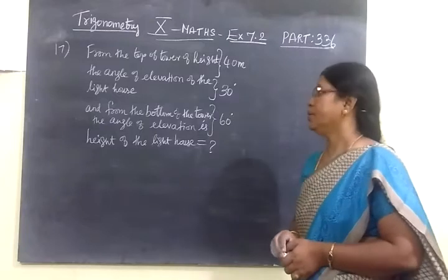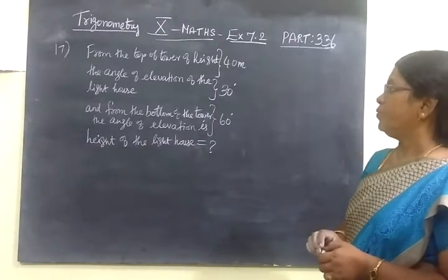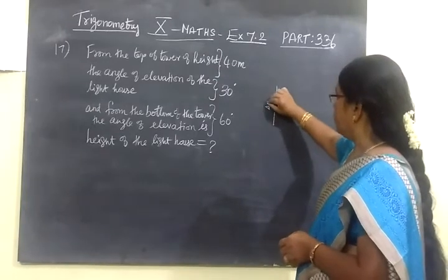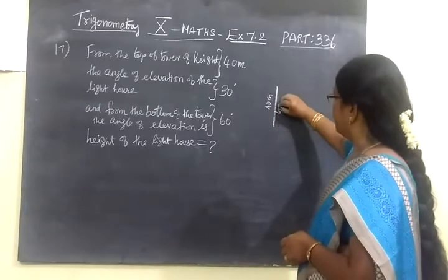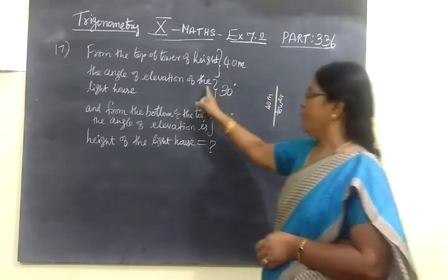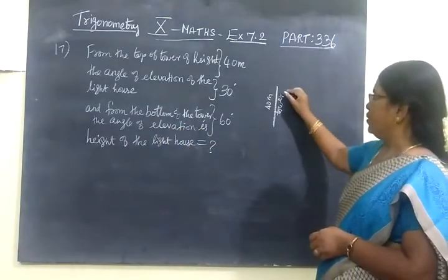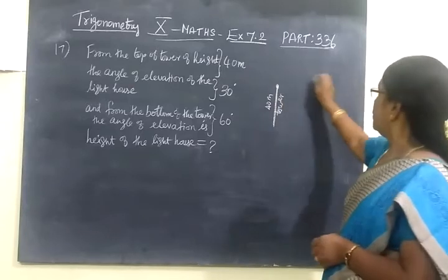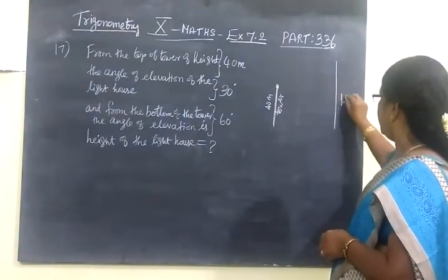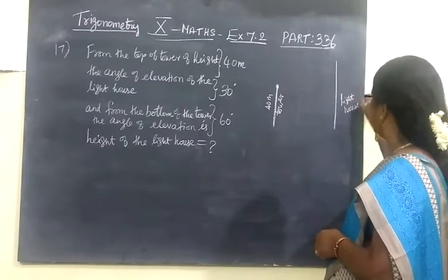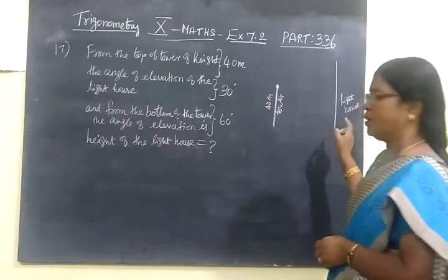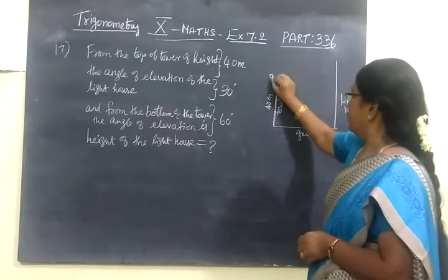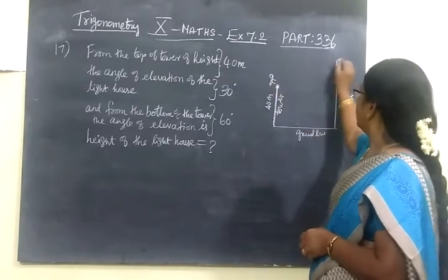Now we want to see part 3. Question number 17: from the top of a tower of height 40 meters. This is the tower. The angle of elevation of the lighthouse — angle of elevation is from the eye level to an object which is higher than the head level. The lighthouse is definitely higher than the tower. This is the ground level.